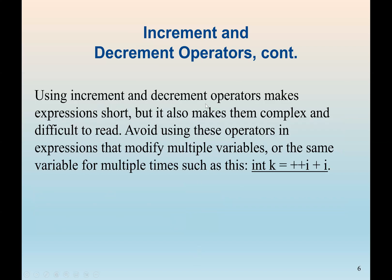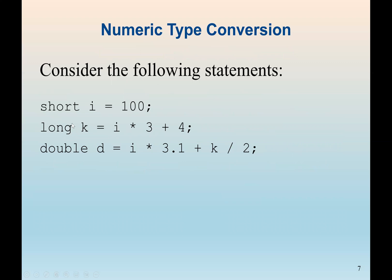Using increment and decrement operators makes expressions short but also makes them complex and difficult to read. We should always avoid using these operators in expressions that modify multiple variables or the same variable multiple times. For example, we have i assigned 100, a long variable k assigned the formula i times 3 plus 4, which is 304, and then a double variable d equal to i times 3.1 plus k divided by 2.